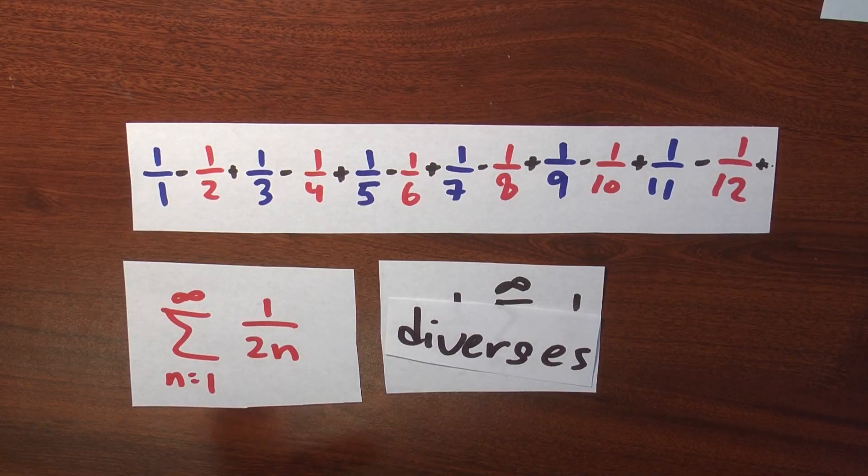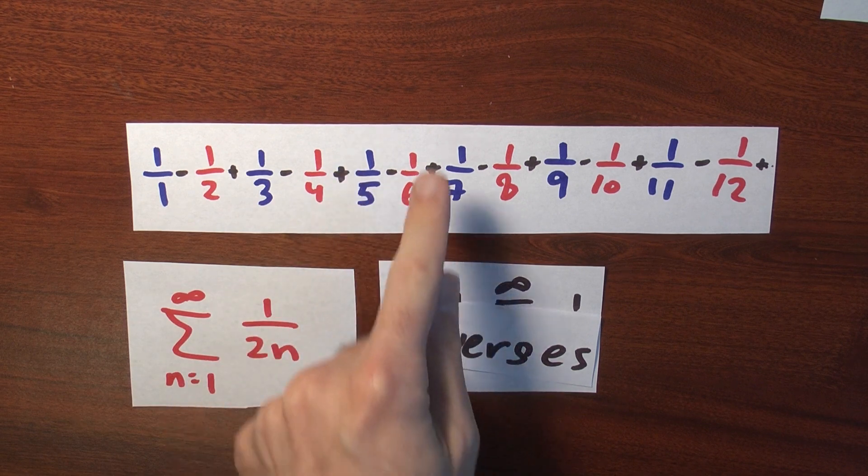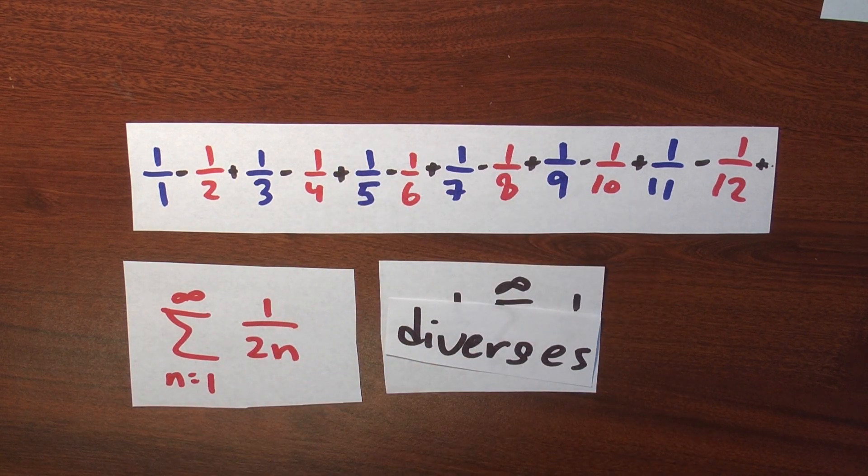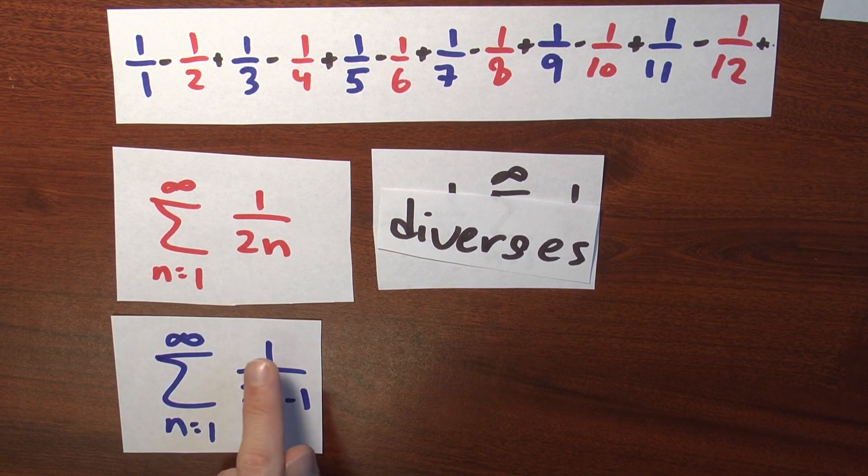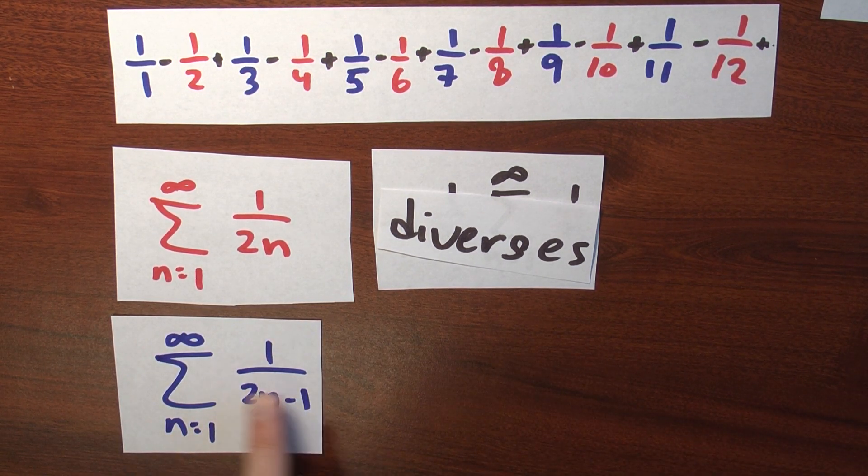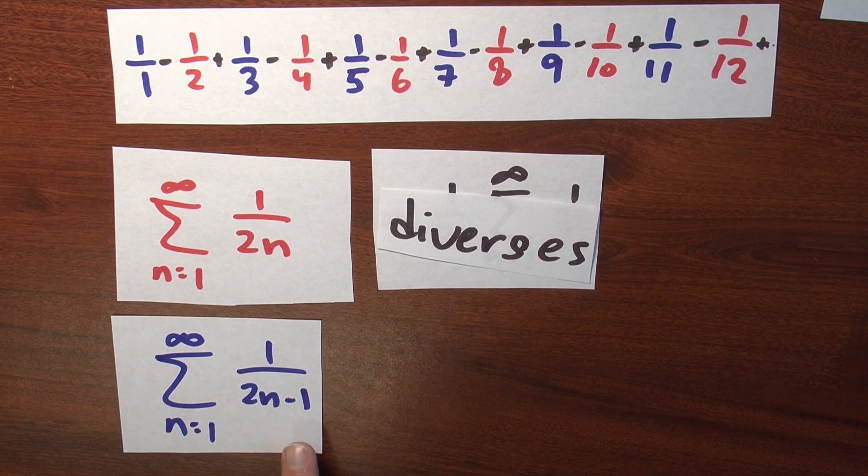What if I just look at the positive terms? Well, in that case, I'm trying to add up 1 over 1 plus 1 third plus 1 fifth plus 1 seventh plus 1 ninth. All right, I'm trying to figure out just how big is this? What's the sum n goes from 1 to infinity of the 1 over odd numbers, right? 1 over 2n minus 1. Does this converge or diverge?